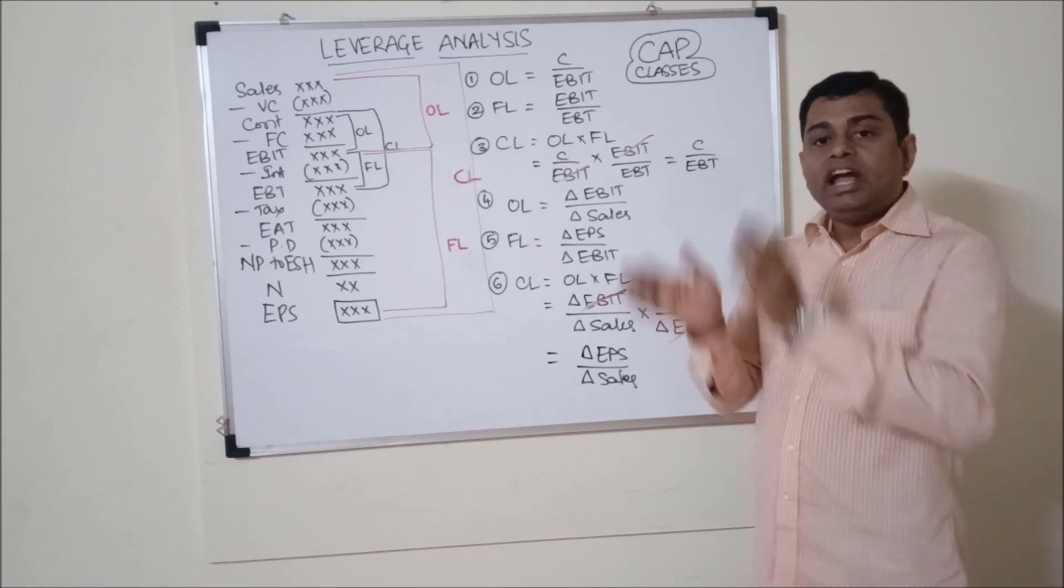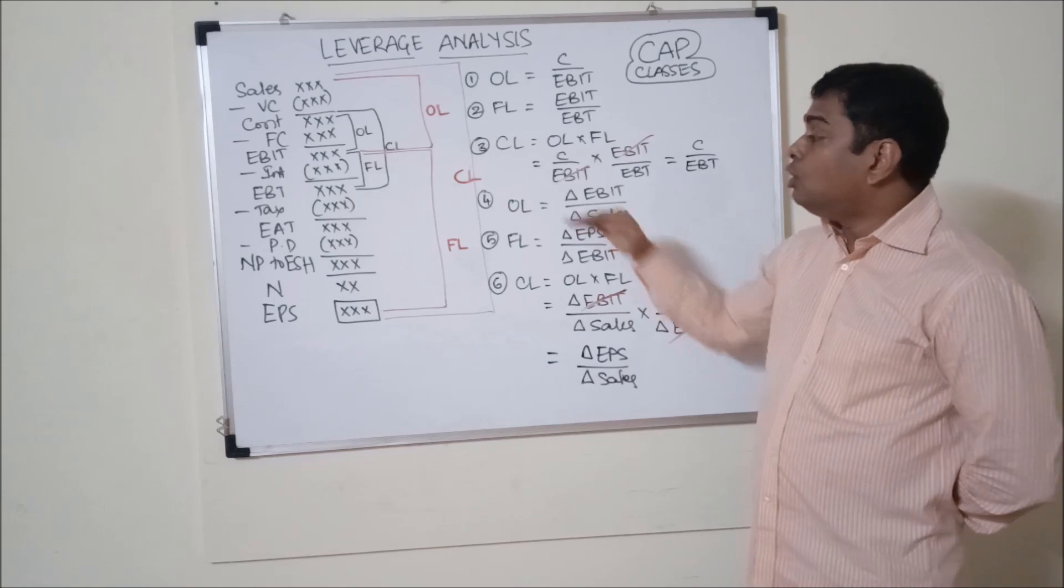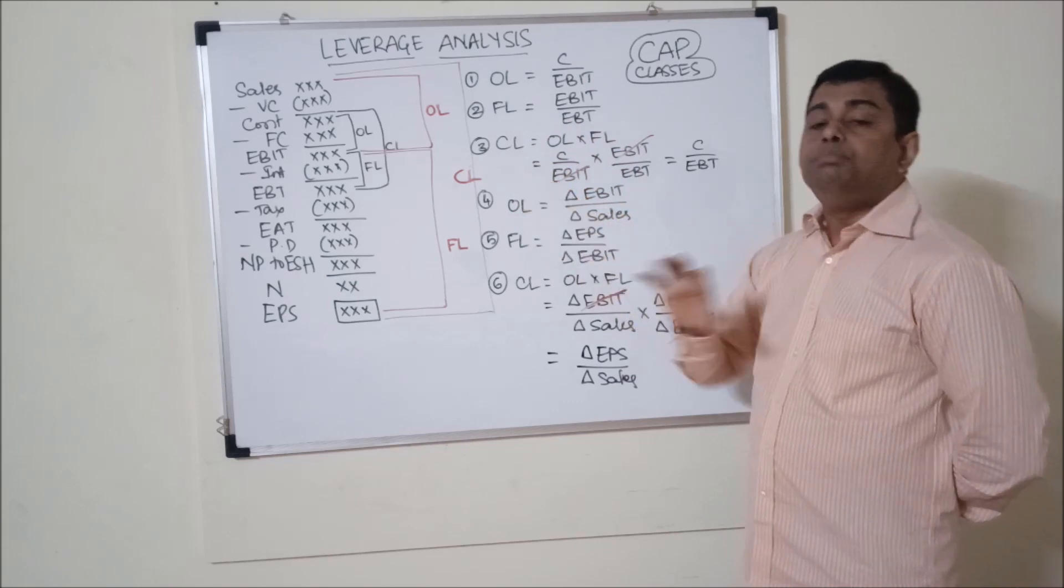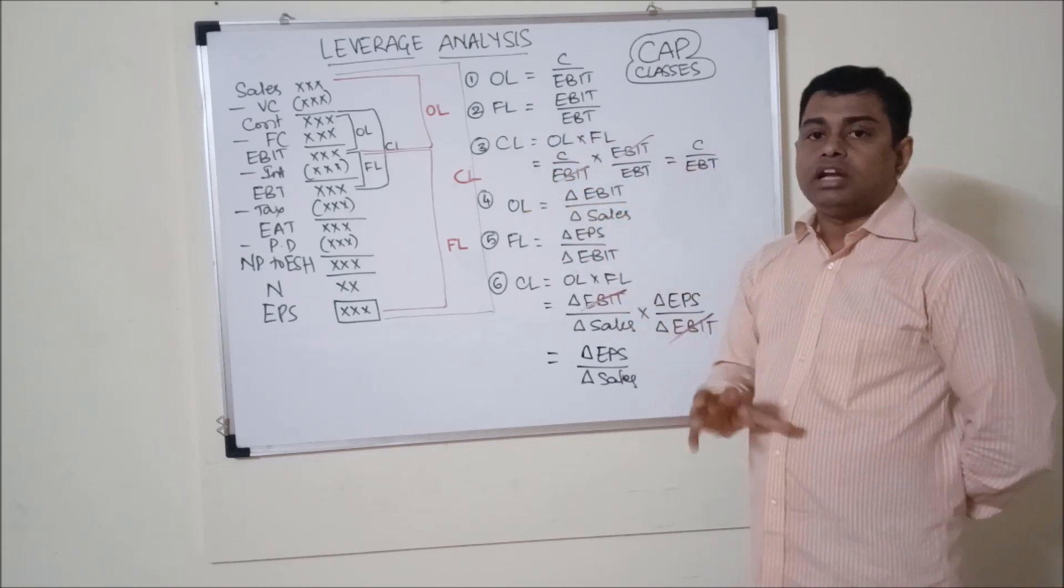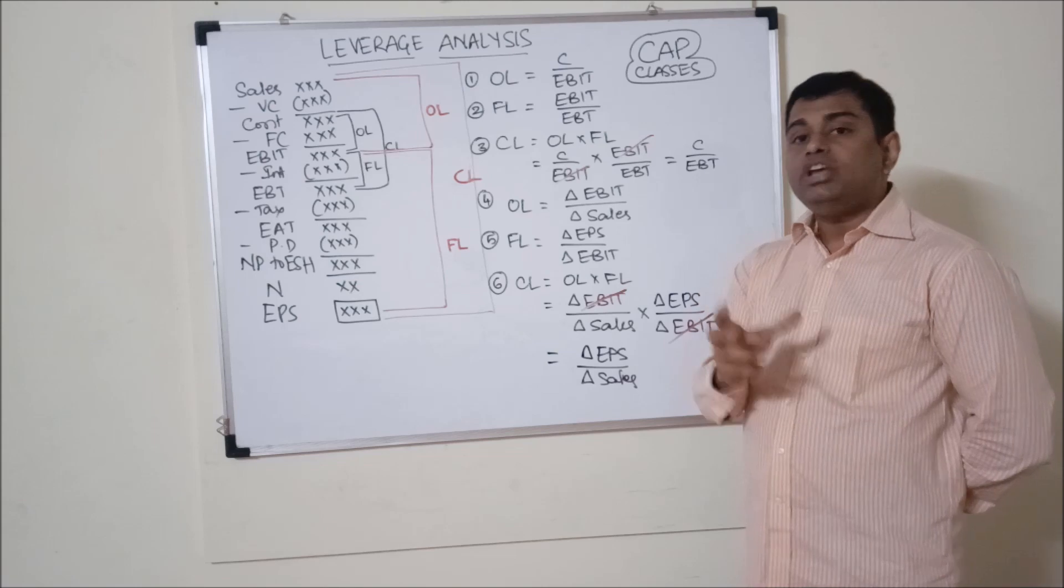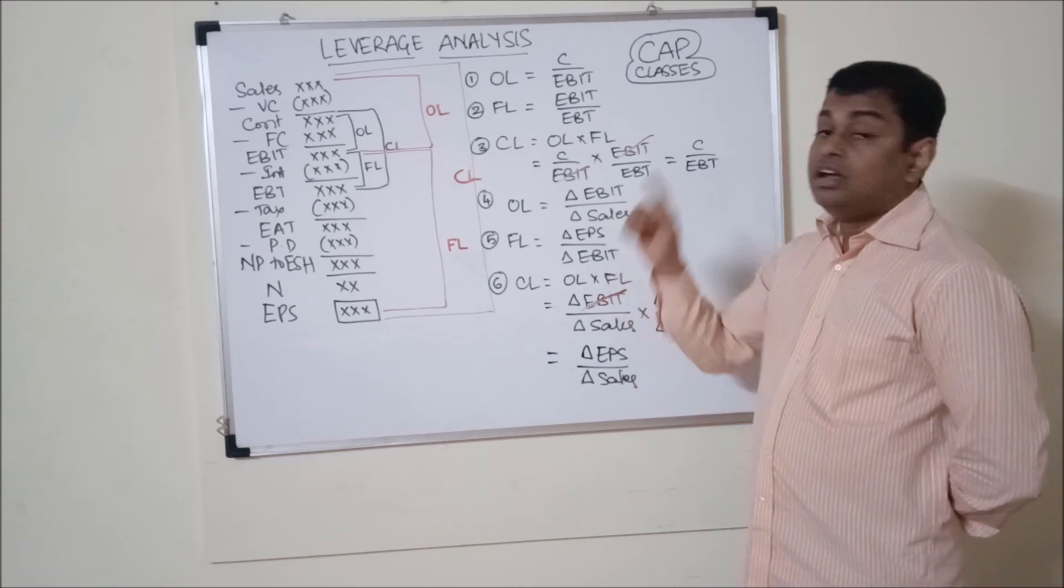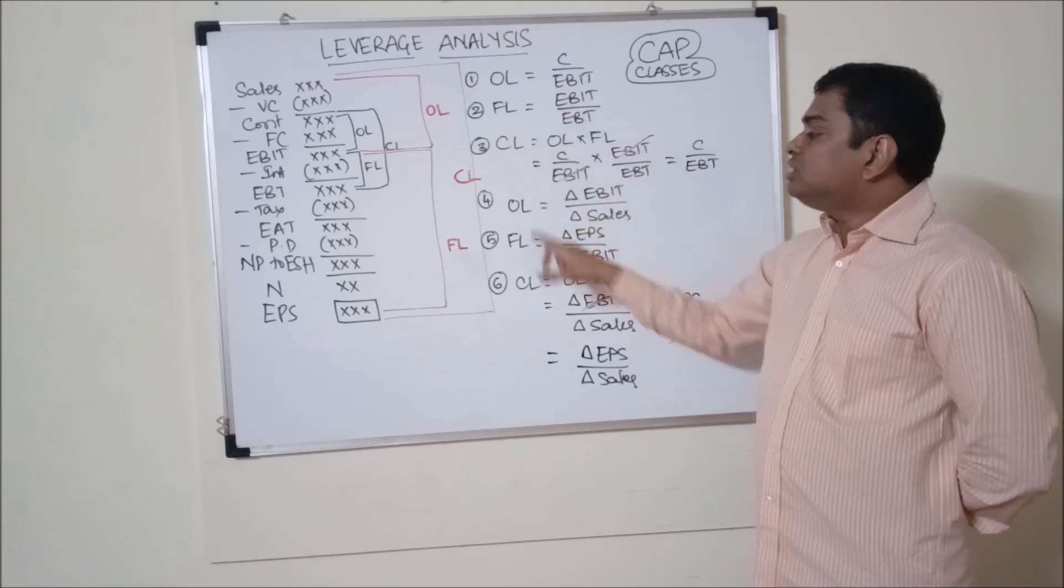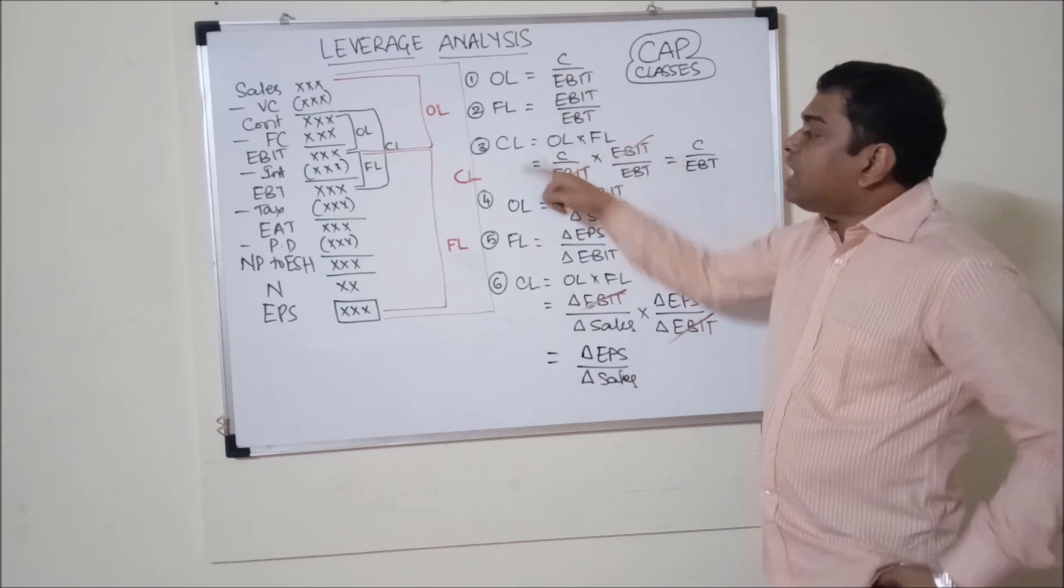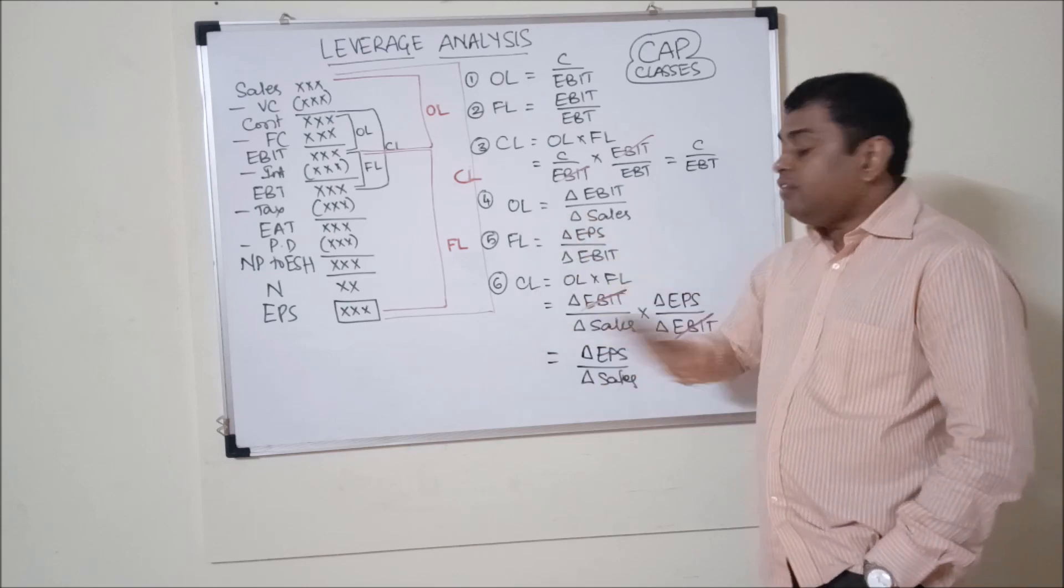So formulas 4, 5 and 6 are relative measures. Formulas 1, 2 and 3 are absolute measures. So in the question if one period data is given, you can calculate using 1, 2, 3 formulas. But in the question, data for 2 years is given, particularly say 2018 and 2019, you can calculate formulas 4, 5, 6. So these are relative measures. One period data, you can calculate 1 to 3 only. Two period data is given, in that situation you use 4, 5, and 6.